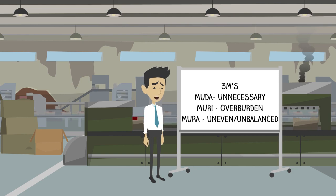Mura means unbalanced or uneven. Fluctuation in customer demand, variation of cycle times for different operations or operators, are examples of Mura or unevenness.